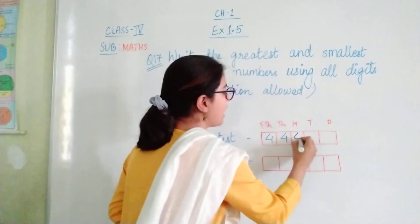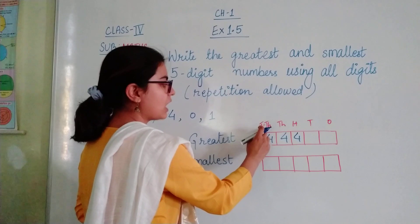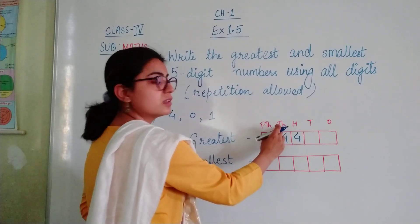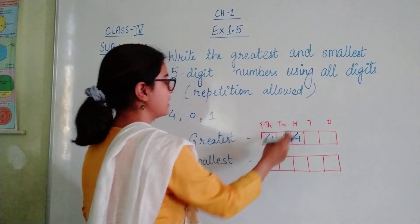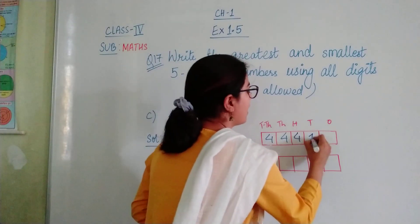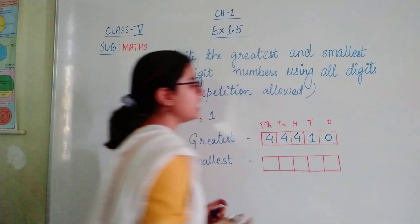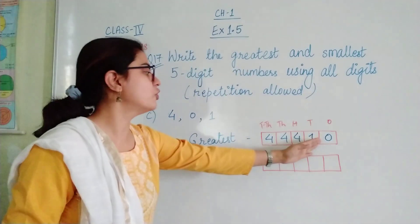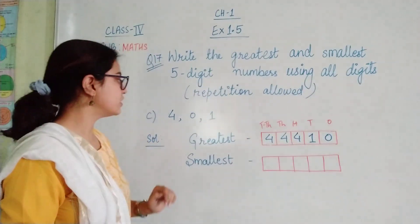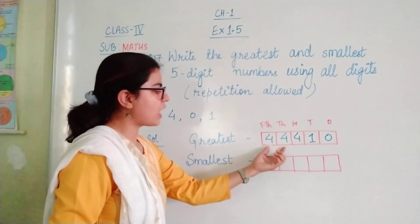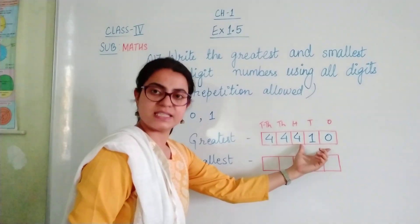So we are writing 4 at 10,000th place, 1000th place, 100th place followed by 1 and 0 at the lower place values. The number which is obtained is 44,410.